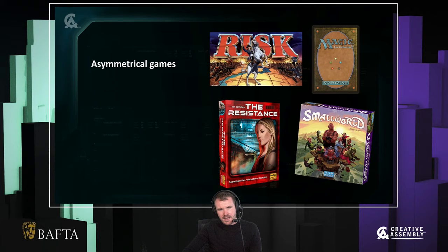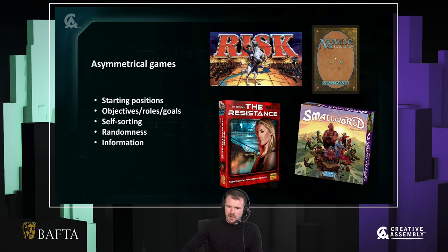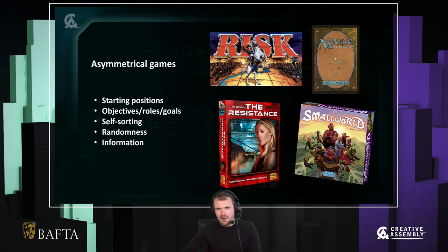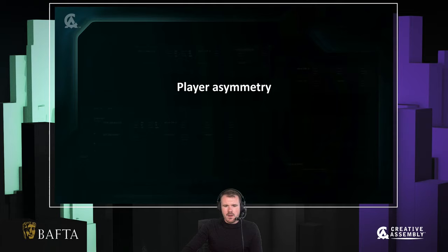Asymmetrical games, on the other hand, are where both players are different in some way. The players might have different starting positions, they might have different objectives, there might be some self-sorting asymmetry — for example, in a co-op game like a puzzle platformer, you're good at puzzles, I'm good at platforming, and you can see how we'd sort ourselves into different categories. There's also randomness — asymmetry can come from the luck of the draw — and there's asymmetry of information, whereby I know something you don't.